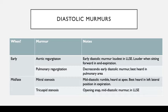Lastly, tricuspid stenosis has an opening snap and is a mid-diastolic murmur best heard in the tricuspid area. Tricuspid stenosis is quite uncommon and can be caused by conditions such as carcinoid, post-infective endocarditis, or myxomas — all of which are uncommon in themselves.